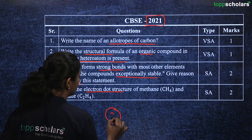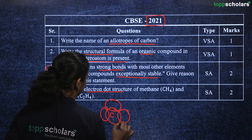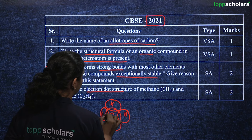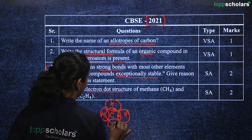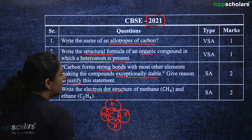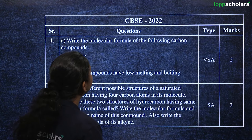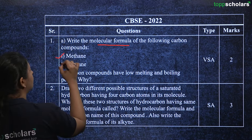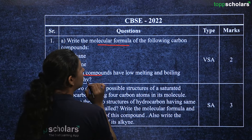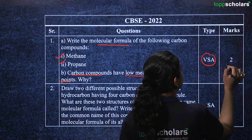For methane, you draw four hydrogen atoms bonded to a central carbon, showing the bonding. Similarly for ethane, you have two carbon atoms with three hydrogen atoms attached to each. Another 2021 question asks you to determine the molecular formula of methane and propane, and state why carbon compounds have low melting and boiling points.